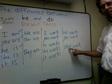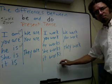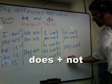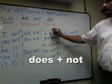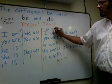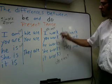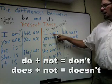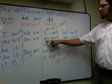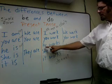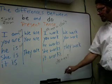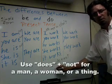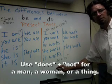To make this negative, you have to add 'do' and 'not': I do not work. Or you can use the contraction 'don't': I don't work. You don't work. He, she, or it have to use 'does': does not work, or doesn't work.